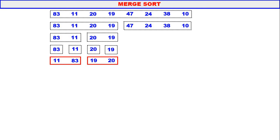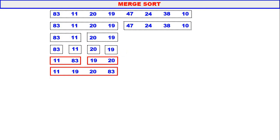In the four-element array, the first part 11, 83 is sorted — we sorted it, not nature. The second part 19, 20 is also sorted — we sorted it. Both parts are sorted, so we merge them. The left part of the original array is now sorted: 11, 19, 20, 83.